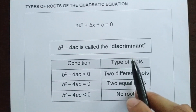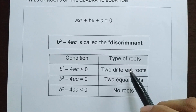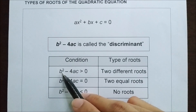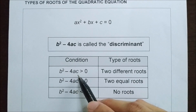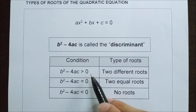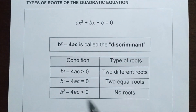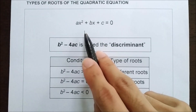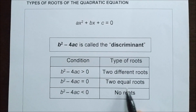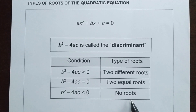The usage of the discriminant is to help us determine the type of roots. When we substitute the values into b squared minus 4ac, if we get a value bigger than 0, the quadratic equation has two different roots. If we get the value equals to 0, it has two equal roots. And if we get a value less than 0, a negative number, it means there are no roots.